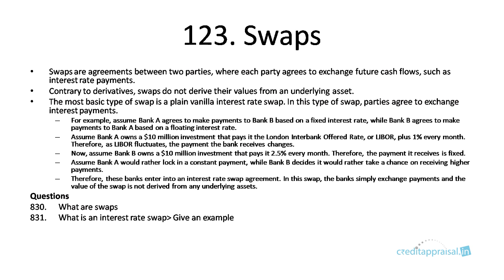We won't get into the motives of why Bank A and Bank B want to do this. But for this example, assume Bank A wants a constant payment whereas Bank B wants higher payments and prefers a floating rate of interest. In this case, Bank A and Bank B can enter into an interest rate swap agreement, where they simply exchange the payments. The value of the swap is not derived from any underlying asset.